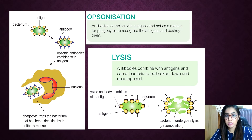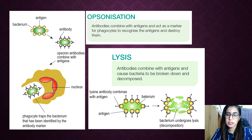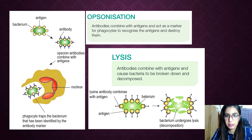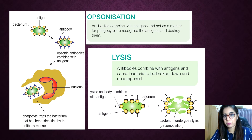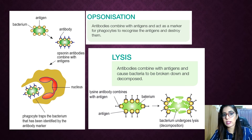Opsonization involves an antibody called opsonin, which binds to the antigen of the pathogen to form a structure recognized by phagocytes. Phagocytes then identify the bacteria marked by the opsonin and swallow them, so phagocytosis is facilitated by this antibody-antigen complex.